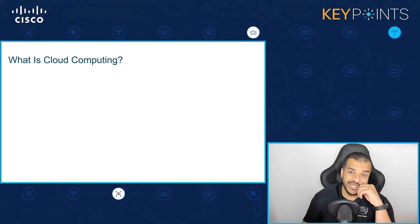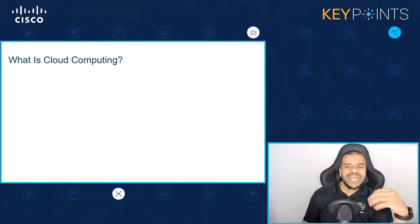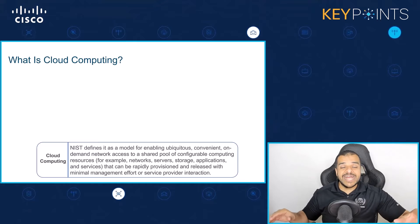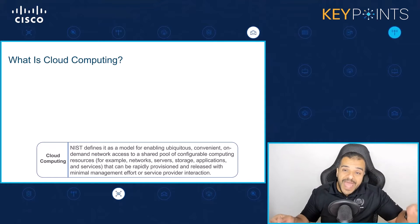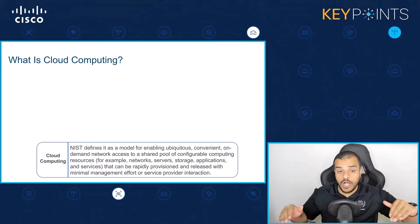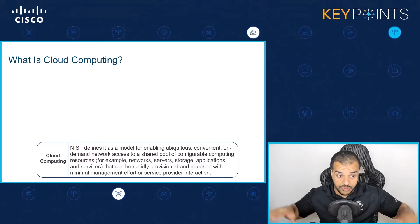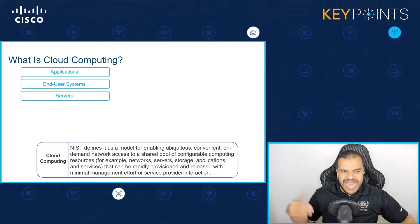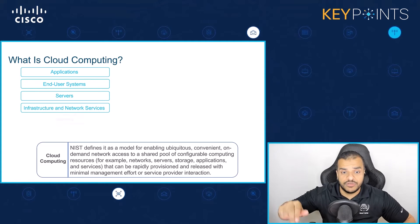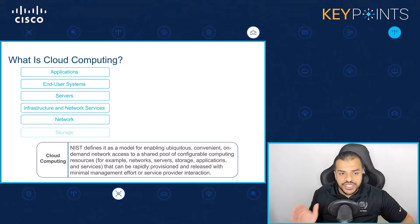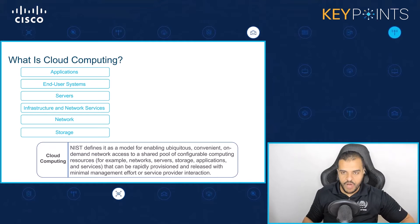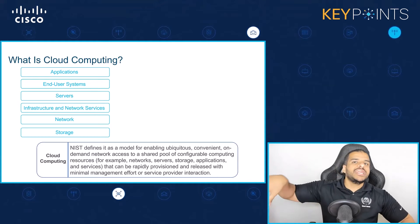So what is cloud computing? In a nutshell, I'm going to define it from the NIST perspective — the National Institute of Standards and Technology. They define it as a model of enabling ubiquitous, convenient, on-demand network access to a shared pool of configurable computing resources — such as networks, servers, storage, applications, and services — that can be rapidly provisioned and released with minimal management effort or service provider interaction.